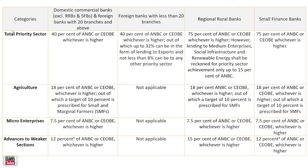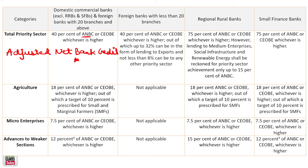40% of ANBC or CEOBE — whichever is higher. The full form of ANBC, which has appeared in previous exams, is Adjusted Net Bank Credit. CEOBE stands for Credit Equivalent of Off-Balance Sheet Exposure. This 40% is the total priority sector target for domestic commercial banks, excluding RRBs, small finance banks, and foreign banks with 20 branches and above.